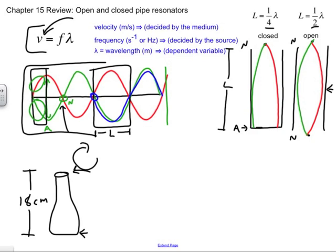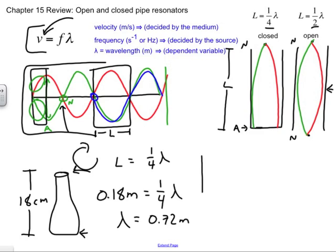I'm going to notice that there's my L. I'm going to be in preferred units, so I don't like 18 centimeters, I prefer 0.18 meters. That's my L. I'm doing my closed pipe here. That's going to be equal to one-fourth of my lambda. When I do the mathematics, multiply 0.18 by four, lambda is going to be equal to 0.72 meters.